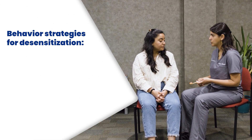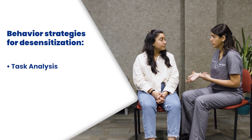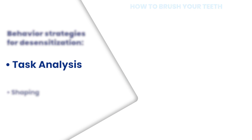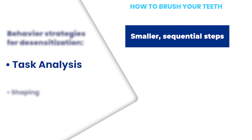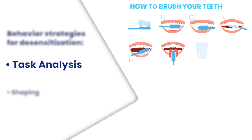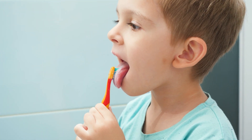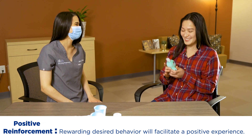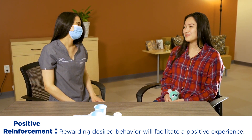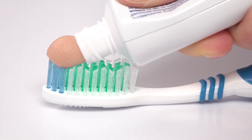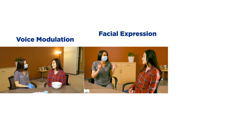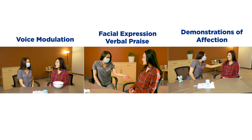Desensitization can be achieved through various approaches. Some helpful behavior strategies are task analysis and shaping. Task analysis is a method of teaching a skill by breaking it into smaller sequential steps, each taught one at a time. A task analysis can be created for an oral home care routine to teach specific skills. Shaping is particularly helpful for individuals who need assistance achieving a certain skill, such as brushing the tongue or placing toothpaste on the toothbrush. It involves reinforcing the individual's consistently improving approximation of the desired skill — for example, gradually reinforcing the appropriate amount of toothpaste with pictures, demonstration, and positive feedback.